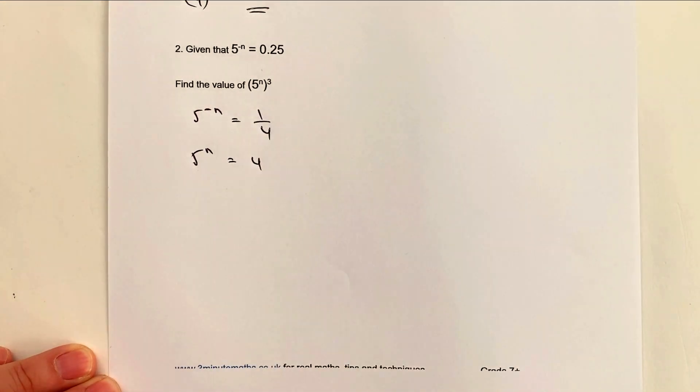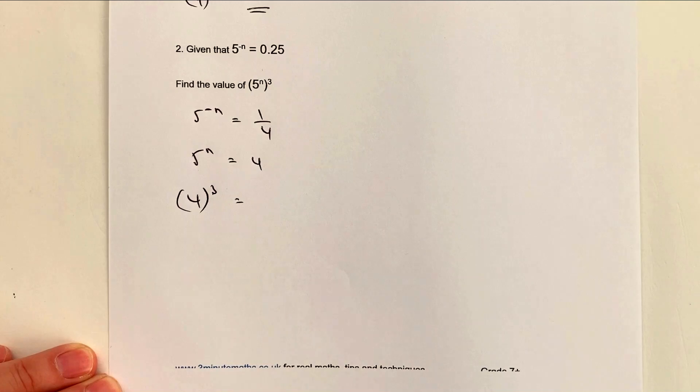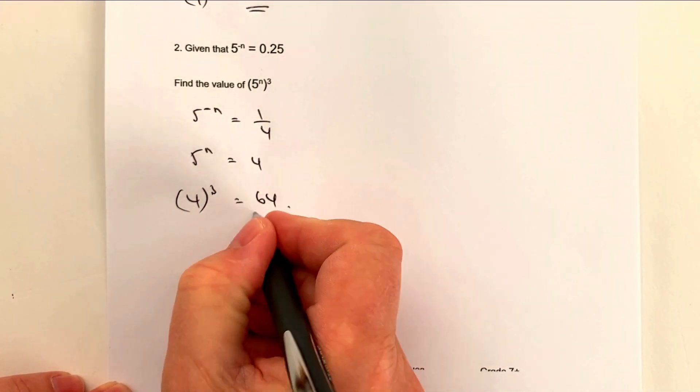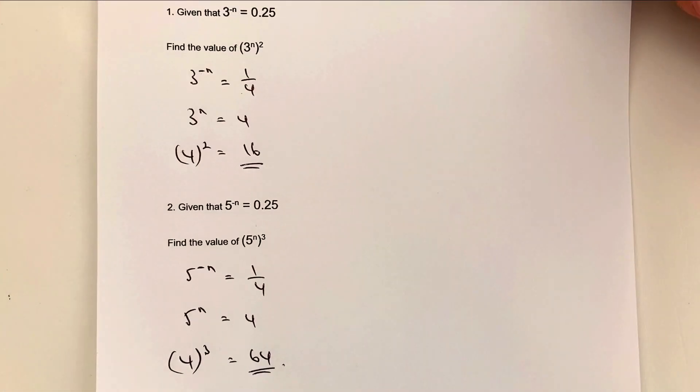So I'm basically going to get 4 cubed, and 4 cubed is the same as 4 times 4 times 4, which is 64, and that's the answer to the second question. Okay, so hopefully that's okay for you.